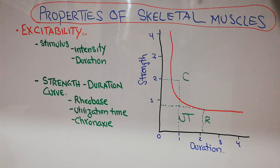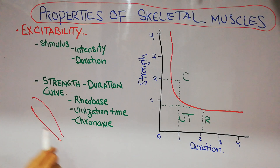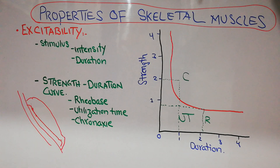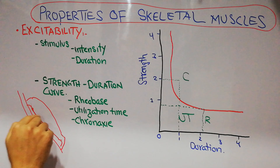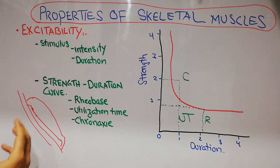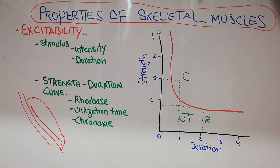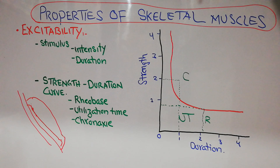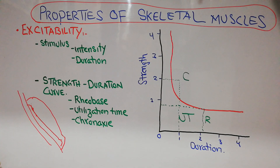A stimulus is basically a change in the environment. For example, a muscle of a human arm attached to a bone — any change in the environment that causes the muscle to respond means it is excitable, and that change in environment is known as the stimulus. It could be of many types: for example, a mechanical change like touching of the muscle.